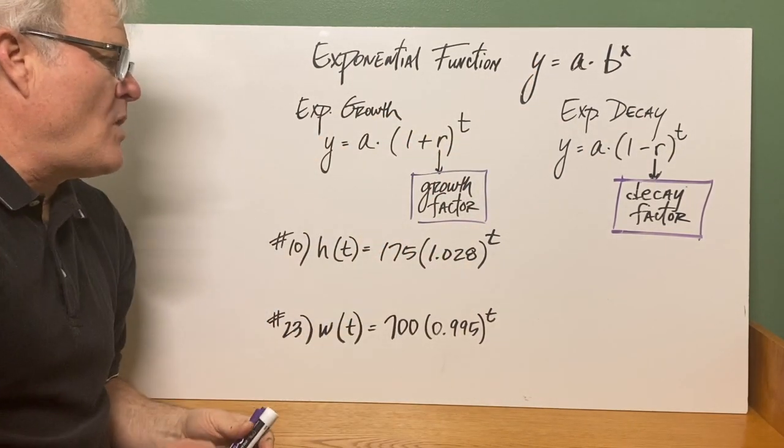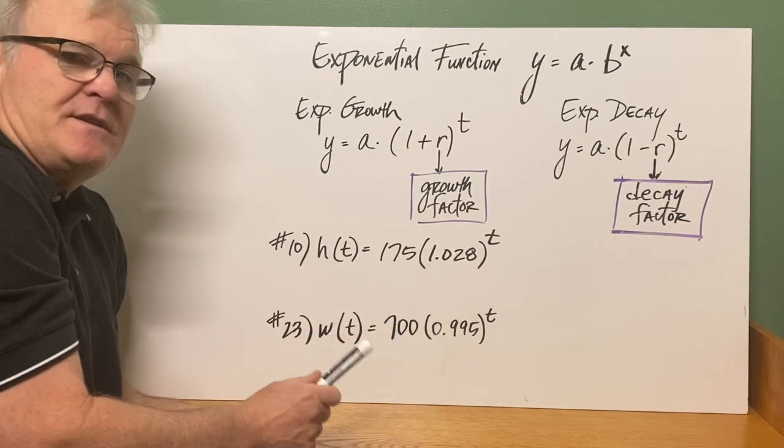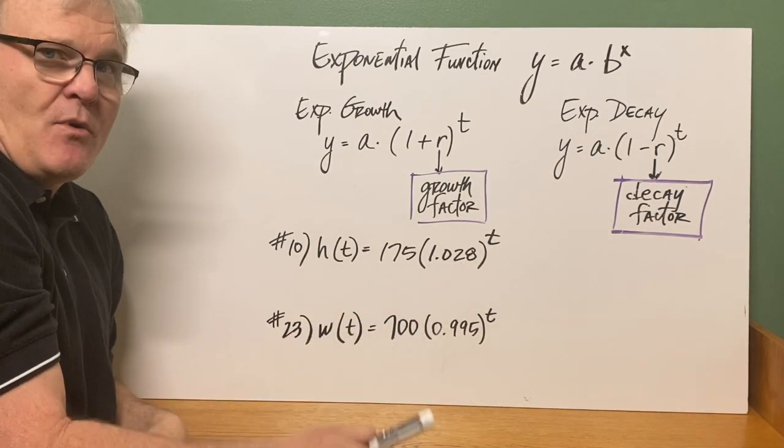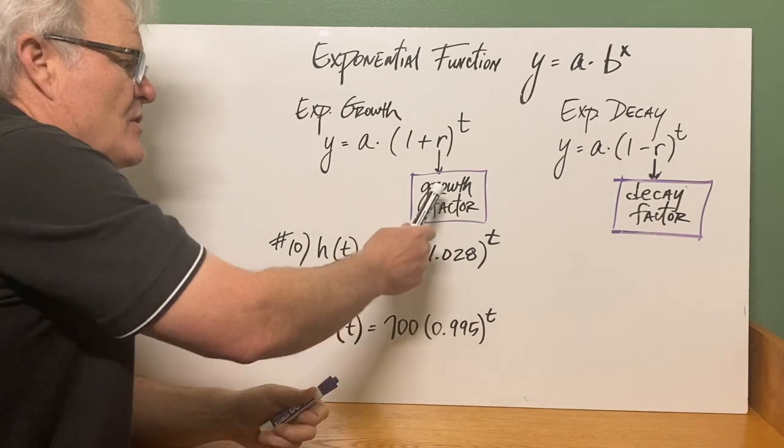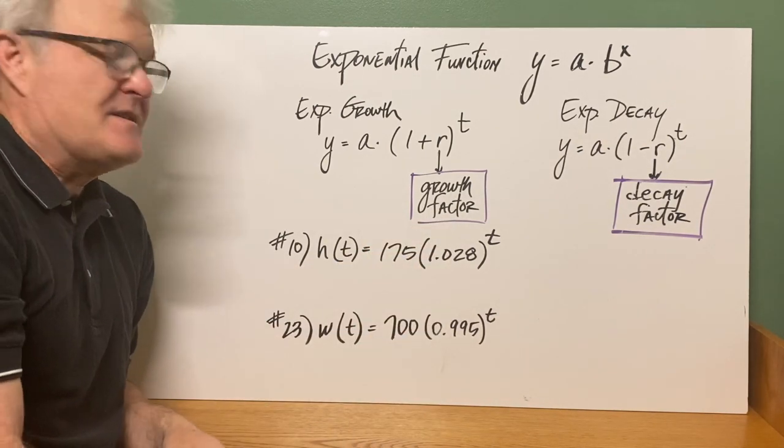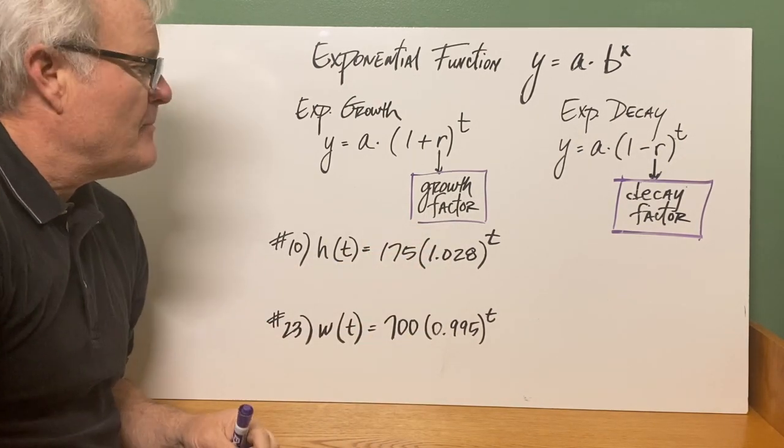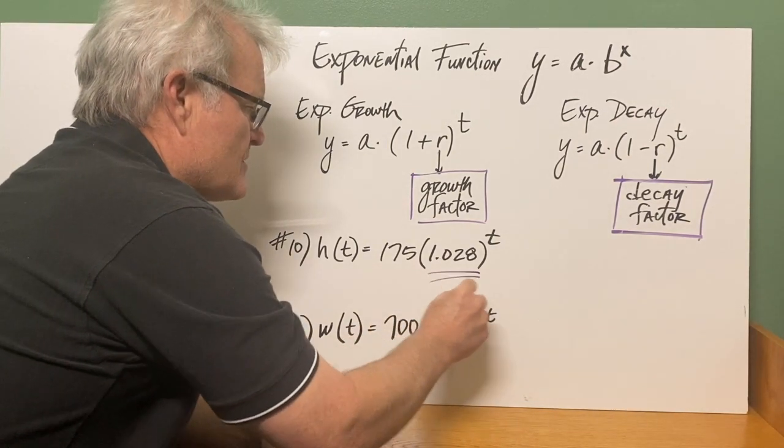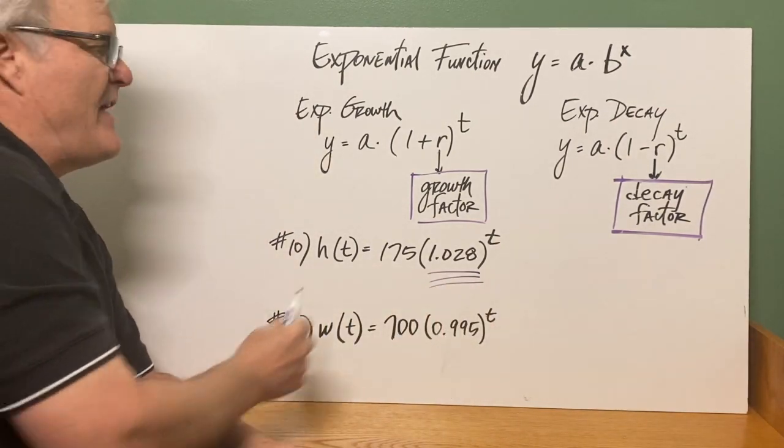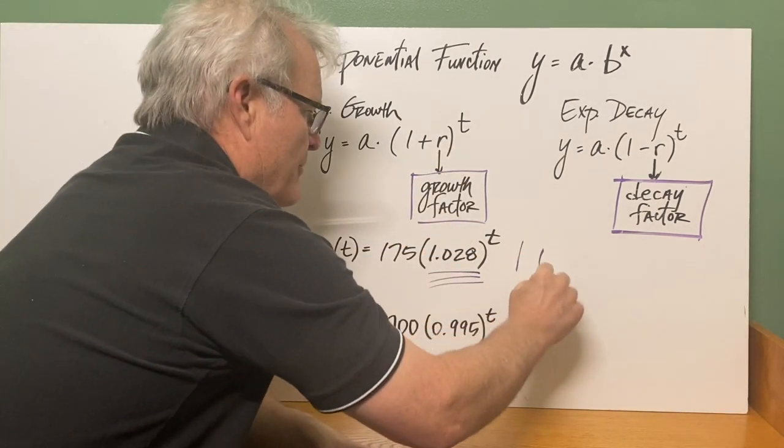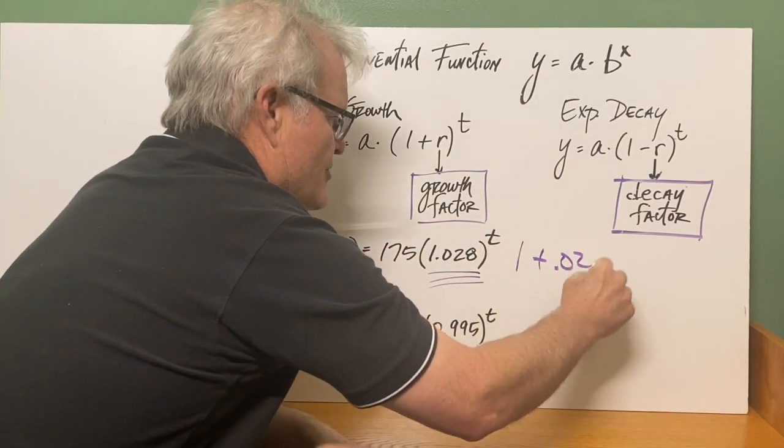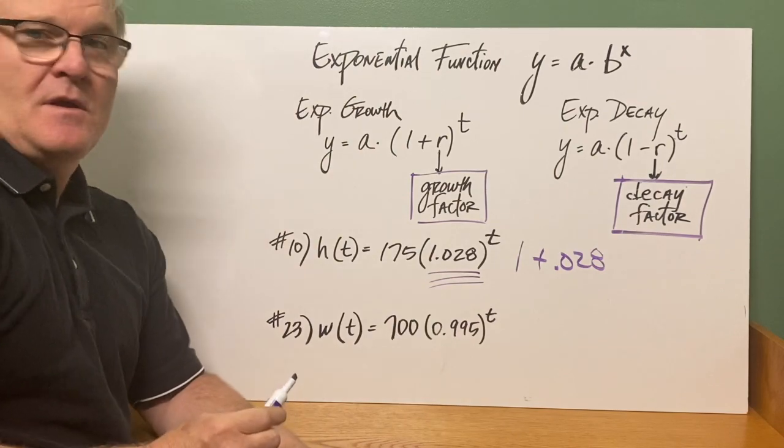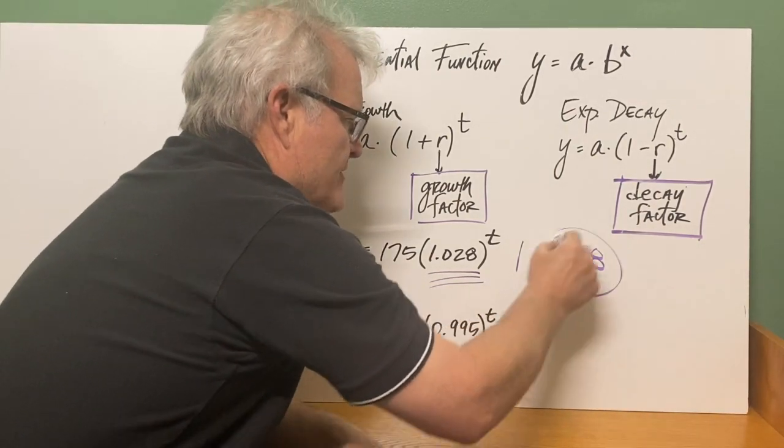This, since it's greater than 1, notice if 1.028 is 1 plus 0.028. So the growth factor would be 0.028. So for this one, your 0.028 is your growth factor, the r. This is 1 plus 0.028. So the 0.028 is your growth factor.